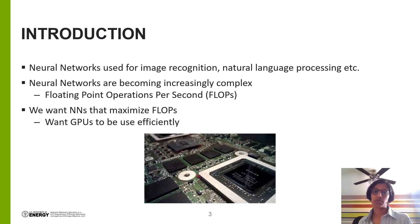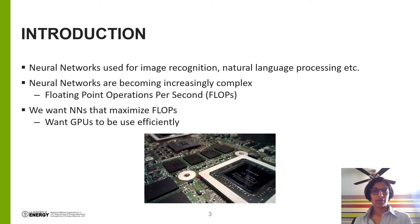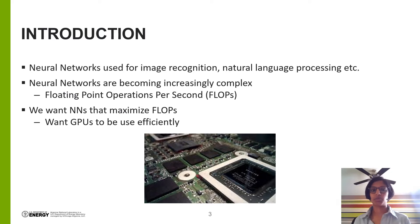One way to measure how well a neural network is performing on its underlying hardware is to calculate the number of floating point operations per second, or FLOPs, that the network can achieve. Simply put, FLOPs are the number of additions, subtractions, multiplications, and divisions that a computer is able to compute in one second. We want to design a neural network that can maximize the number of FLOPs achieved on the GPU.